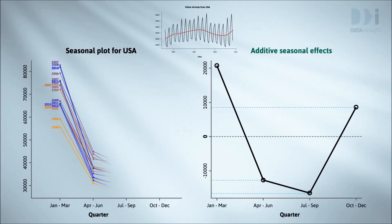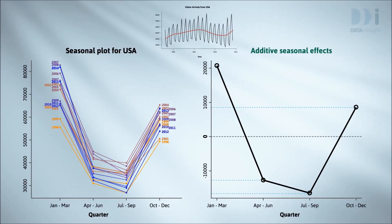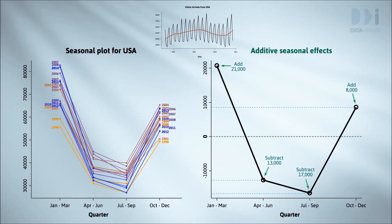Here's a seasonal plot for USA. We've seen things like the left-hand panel before — we plot against quarter and draw a separate profile for each year. But what about the right-hand panel? It's the average seasonal effect. We'll deal with the annotations later.